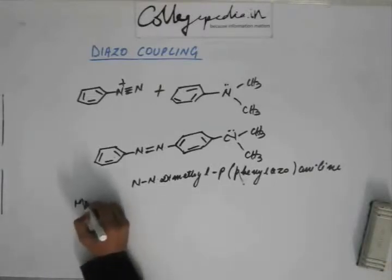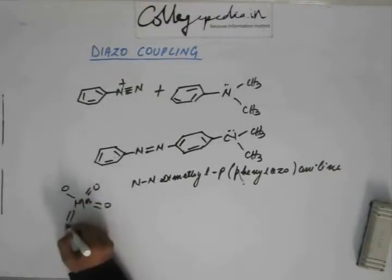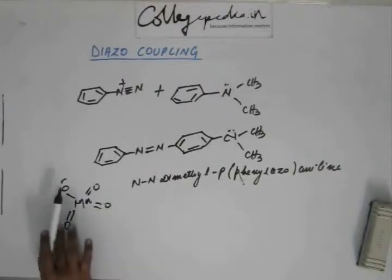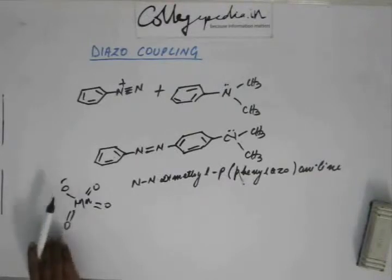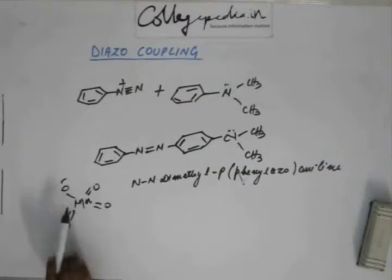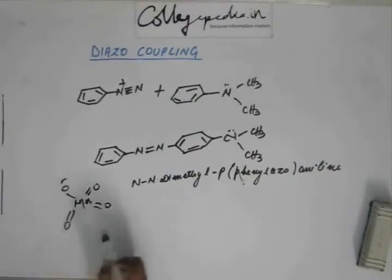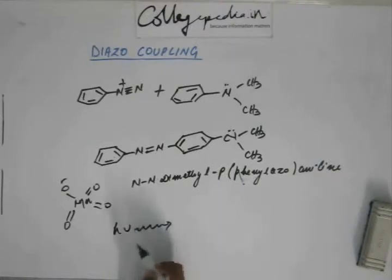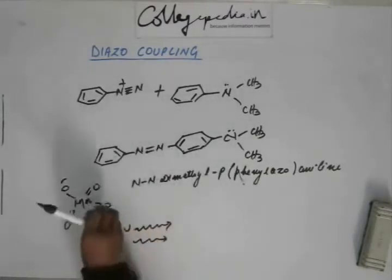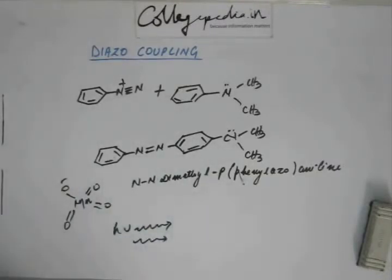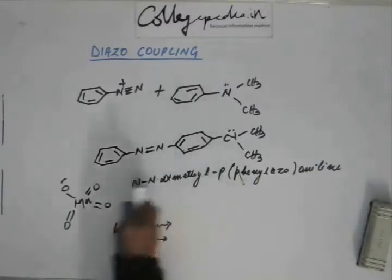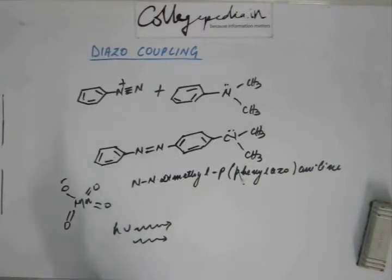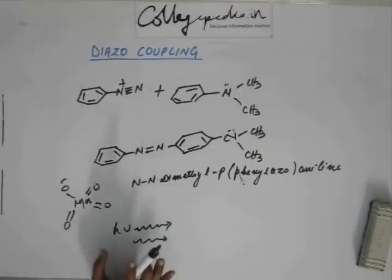Potassium permanganate is purple in color. The reason for that is electrons from oxygen transit from their orbital to the d orbital of manganese and go back and forth. When the electron goes to a higher energy level and comes back down, it releases a photon of a certain wavelength, and the corresponding color comes out of that compound. Similarly, when electrons transit from one orbital to another in azo compounds, they release waves of a particular wavelength and color. The extent of conjugation determines the color of the compound.